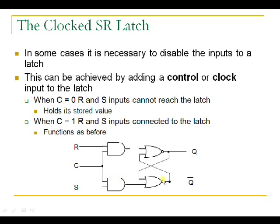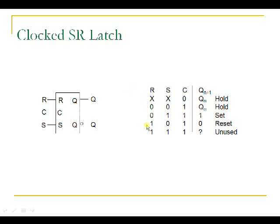If C is 1, this circuit performs the same operation as the NOR gate SR latch. This is the graphical symbol of the clocked SR latch, and the functional table shows: if clock input is 0, whatever the input, the output holds the same state Q-present. If clock input is 1, the output varies according to SR. If SR is 0,0 it holds present state; if 1,0 output is 1; if 0,1 output is 0; and if 1,1 it is an indeterminate state that should not be used in applications.